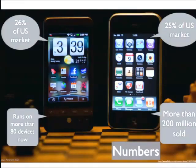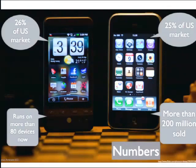There are numbers that speak for themselves. More than 25% of the U.S. market is using iOS — including iPad and iPhone. And then 26% of the market is using Android devices, which runs on more than 80 devices these days. The other players, like RIM and BlackBerry, are still around but coming lower and lower day by day. So there are a couple of strong reasons to think about your mobile strategy and how to build apps, what to use, and how to achieve your goals.